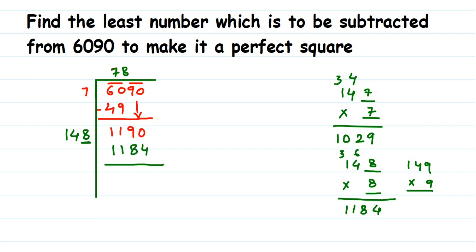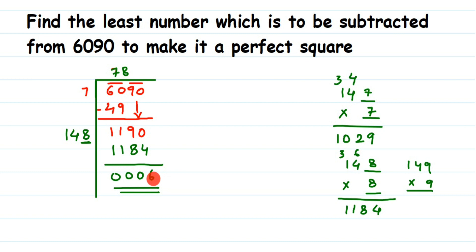So 148×8=1184. Subtracting from 1190, I get a remainder of 6. I cannot solve this further. Now, if this remainder 6 was not there — if I subtract 6 from the given number — it will become a perfect square. The remainder 6 is the extra amount. If the remainder were 0, the given number would already be a perfect square.